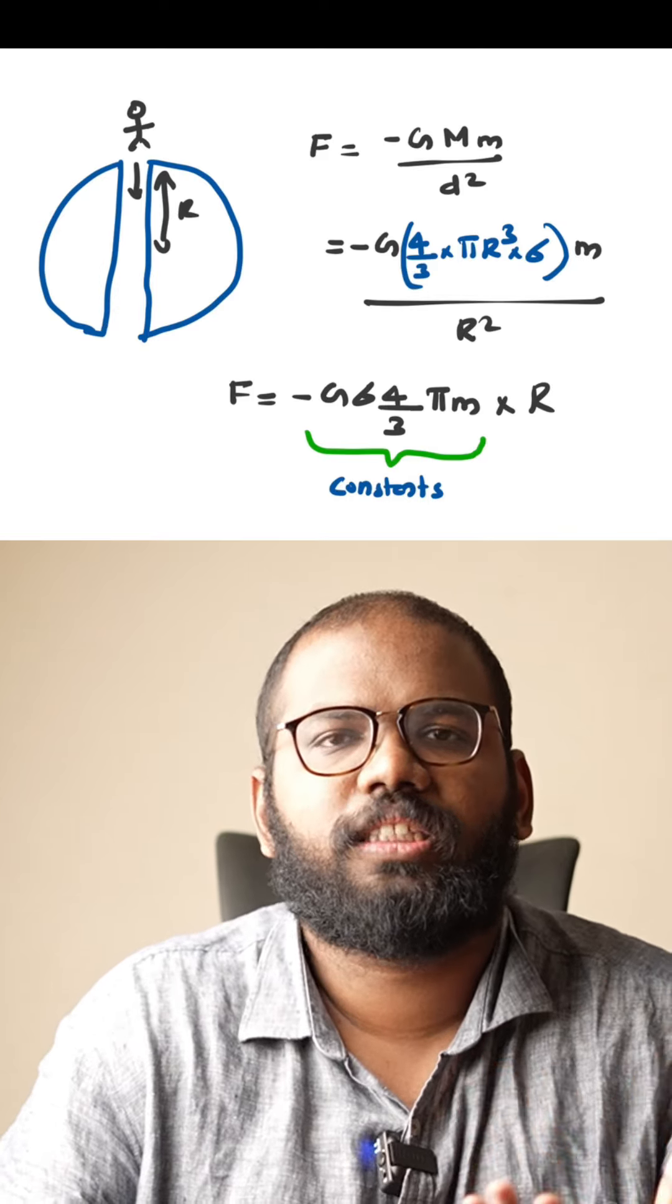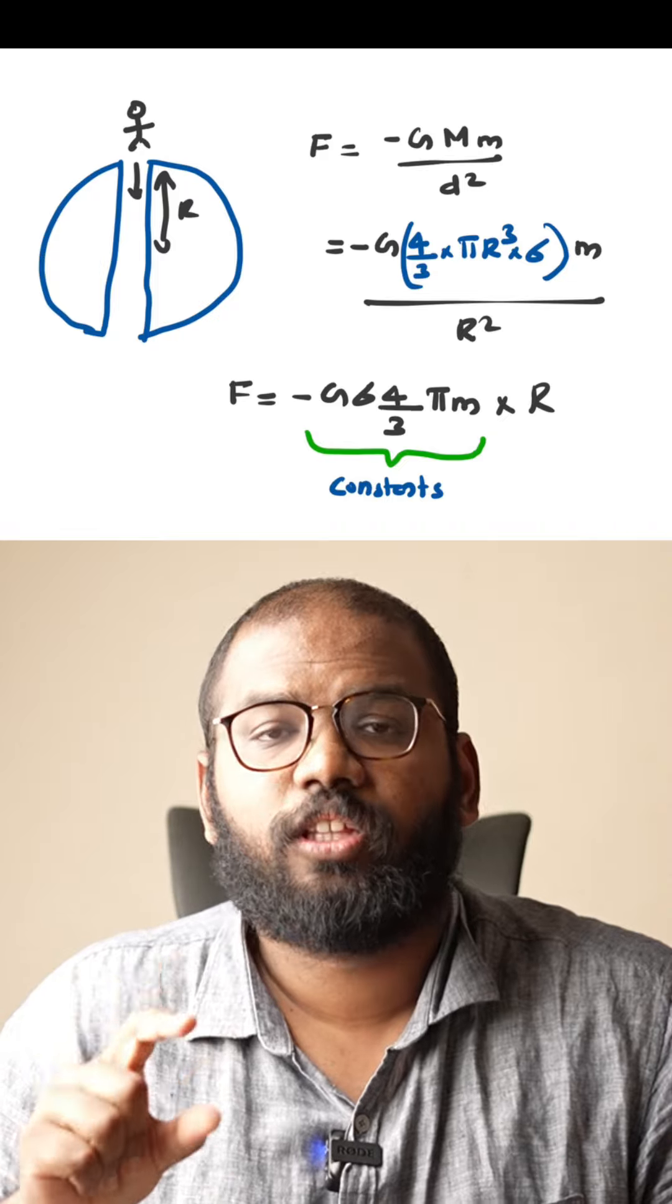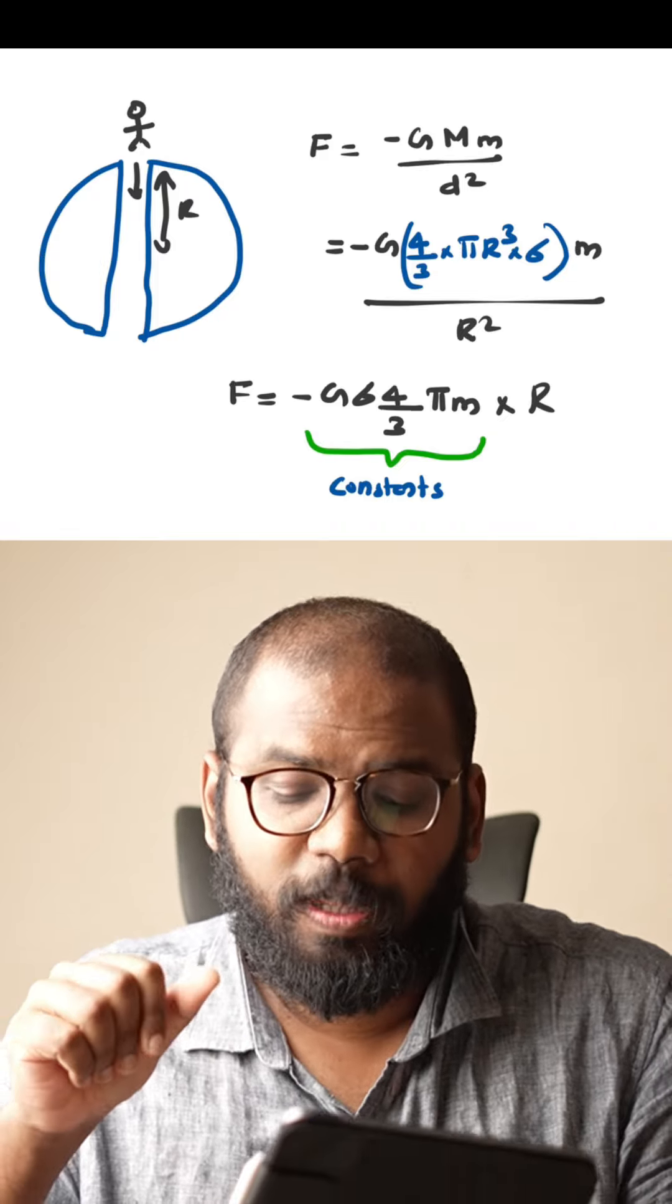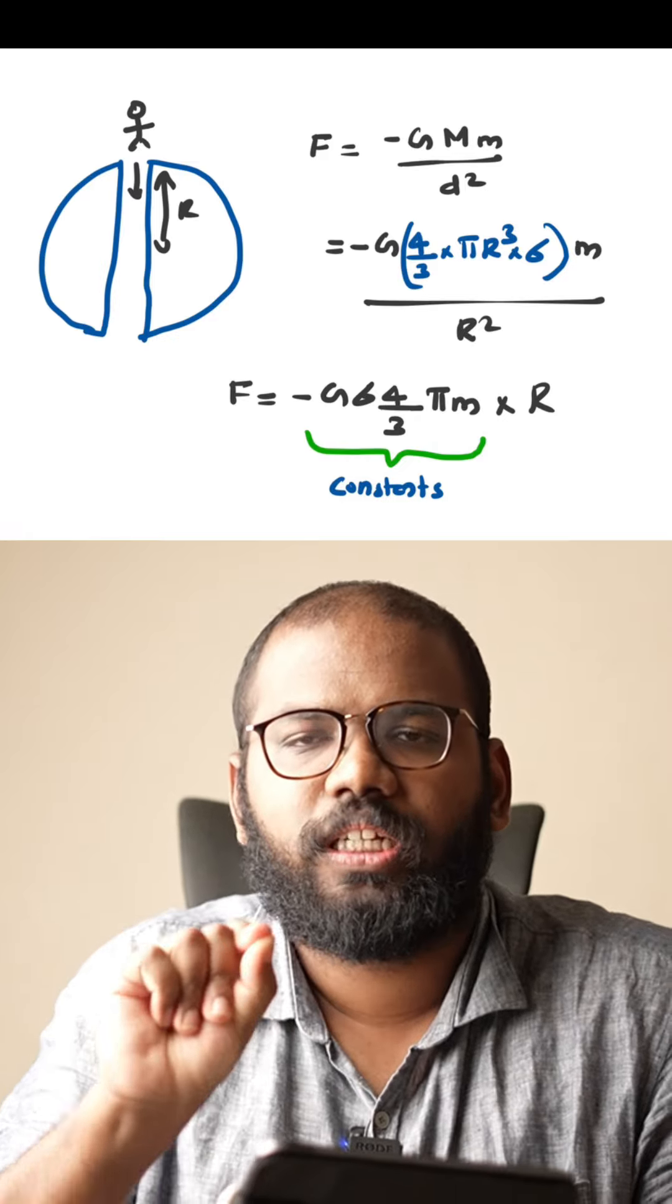I'm going to do some calculations now. The force is minus Gm1m2 by r². If you have a perfect sphere, you will have a constant. Then minus G into 4 by 3 pi r³ into density into m by r². This is a constant of r.